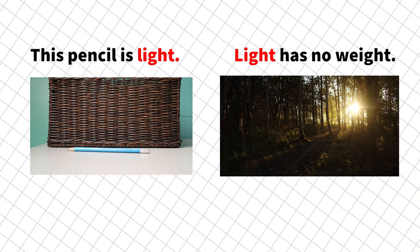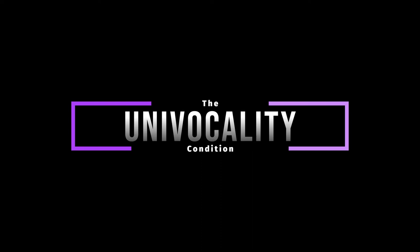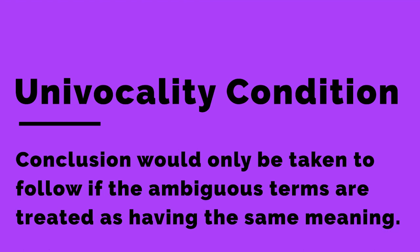Third, there's what I call the univocality condition. This condition is that the conclusion would only follow, or at least be taken to follow, from the premises if the ambiguous expressions are given a single or univocal meaning. I'll talk more about this condition when we look at some examples of the equivocation fallacy.